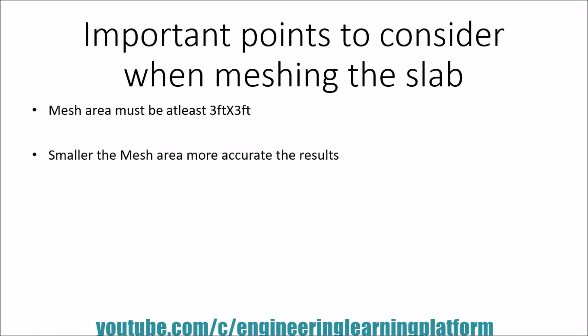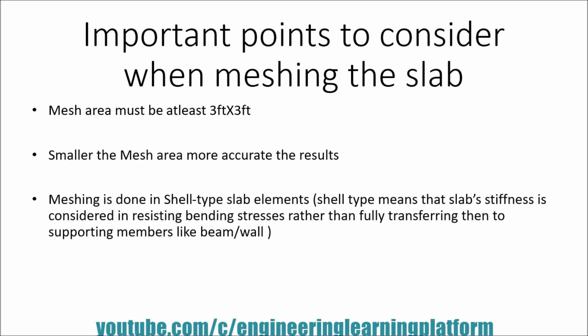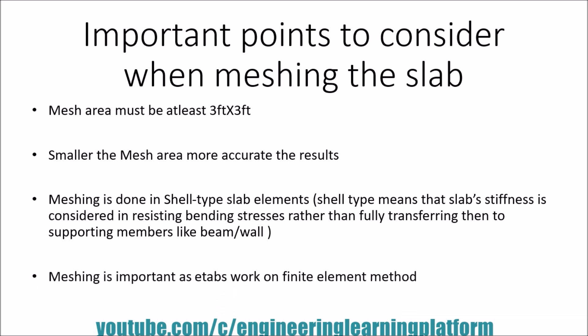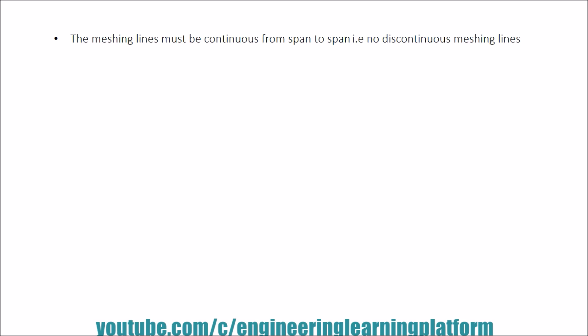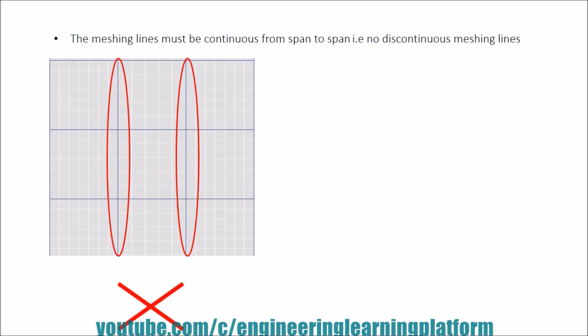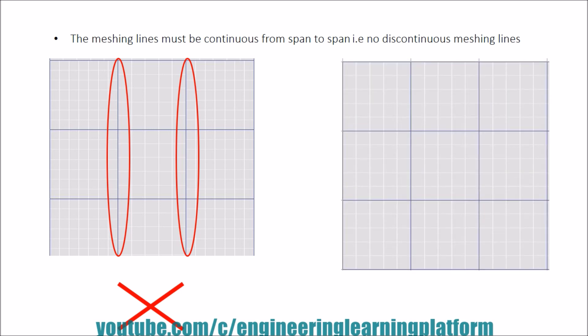Important points to consider when meshing the slab: the mesh area must be at least 3 feet by 3 feet — the smaller the mesh area, the more accurate the results. Meshing is done in shell type elements. Meshing is important because E-tabs works on finite element methods and results are given at the nodes. The meshing line must be continuous from span to span — there shall be no discontinuous mesh. The left side image shows wrong meshing while the right side shows the correct meshing.